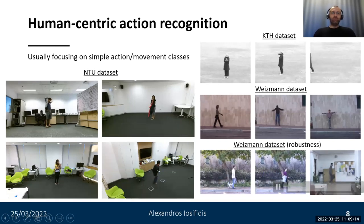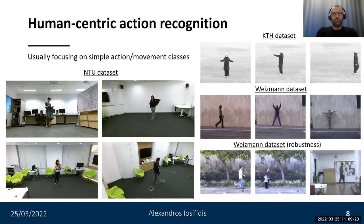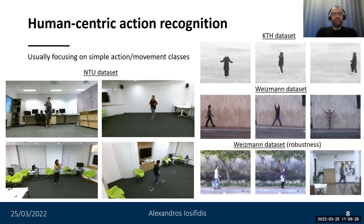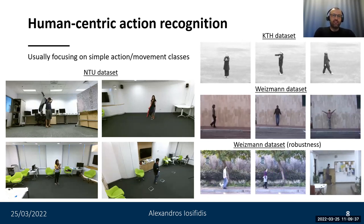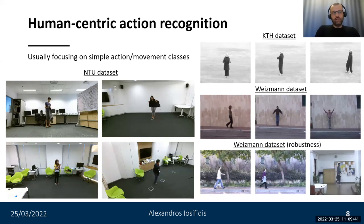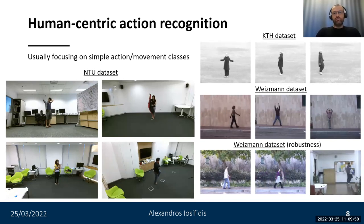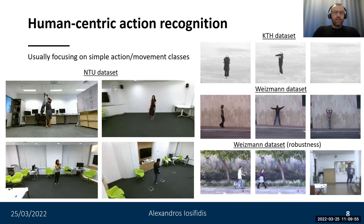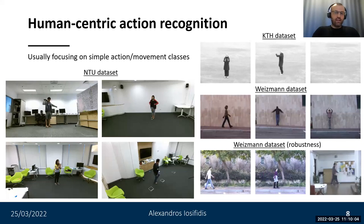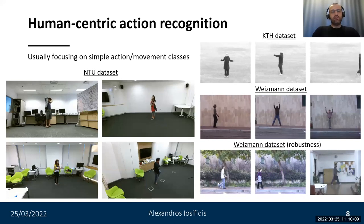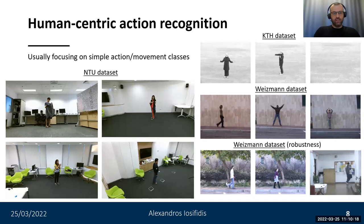Here we can see example videos from three video databases commonly used for evaluating human-centric action recognition. The KTH and Weizmann datasets were used mostly in the 2000s and are formed by a small number of videos. The NTU dataset is a larger one with simple actions captured by multiple cameras, and it is currently very often used for evaluation. The actions performed are quite simple and the background is quite simple, especially in the Weizmann and KTH datasets, making it easy to extract human body silhouettes, which was the main idea of early methods for human-centric action recognition.